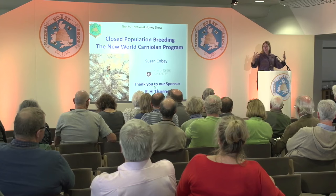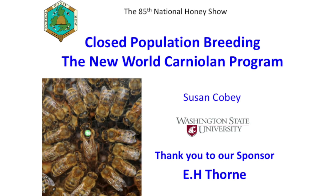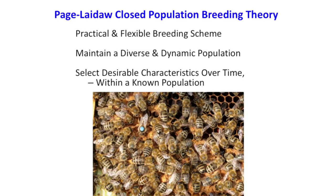The breeding program I started in the early 80s, and I think the real beauty of it is the simplicity of it. That's given its longevity. Harry Laidlaw and Rob Page wrote this breeding theory based on working with a population. It's dynamic, it's flexible, as long as you maintain enough genetic diversity within that population.